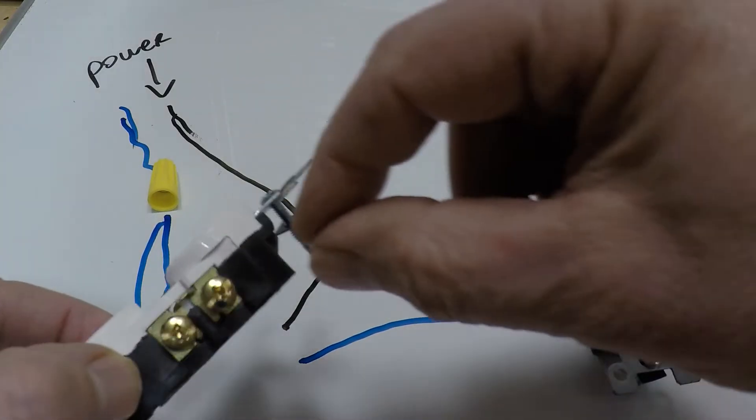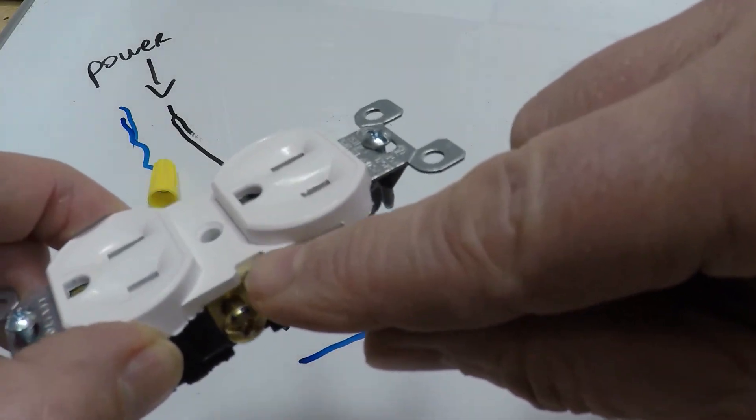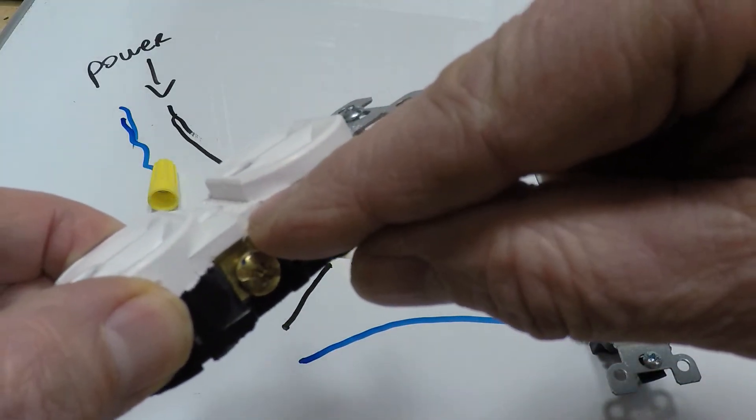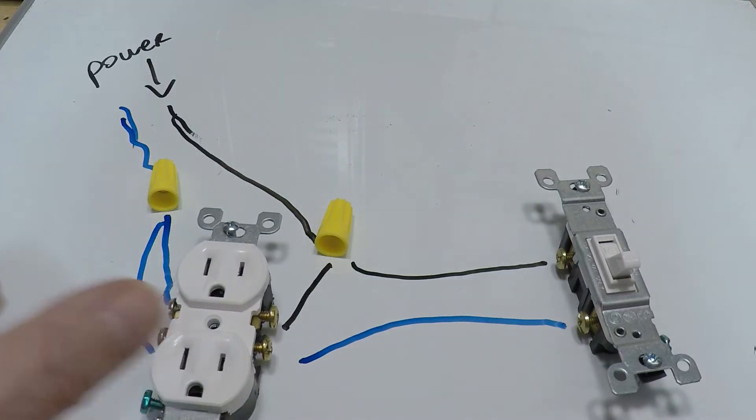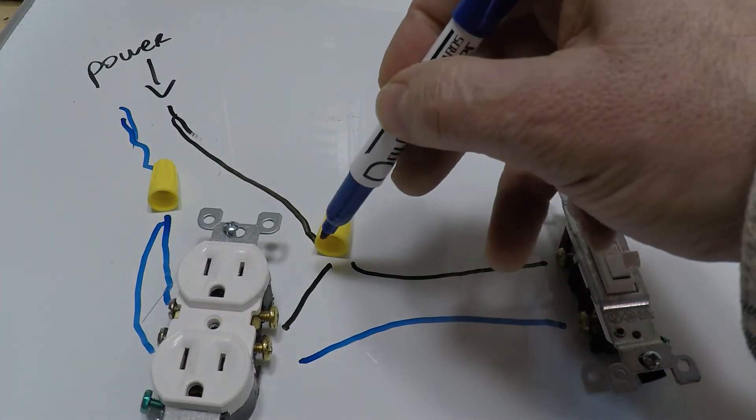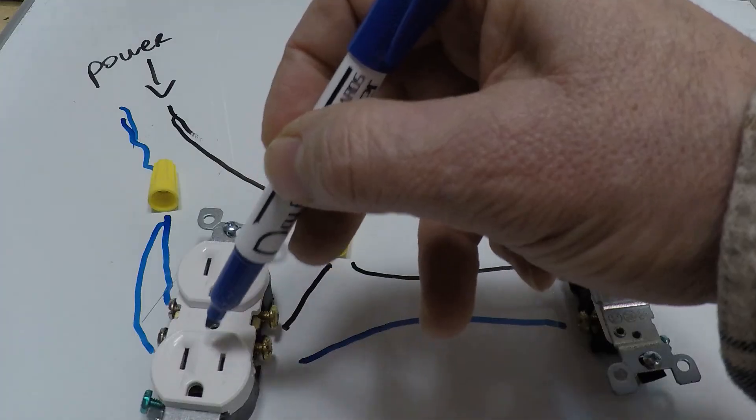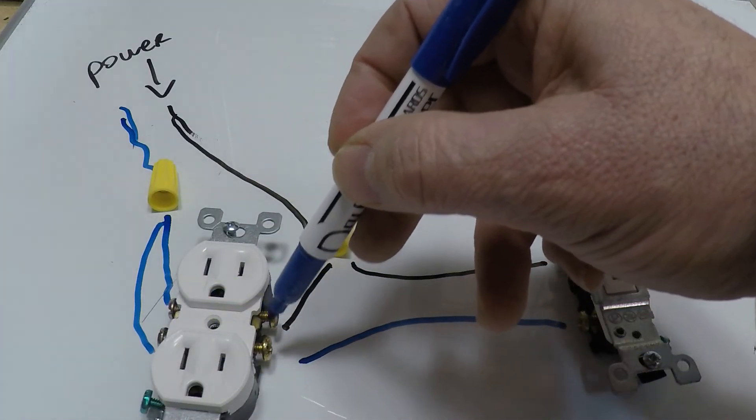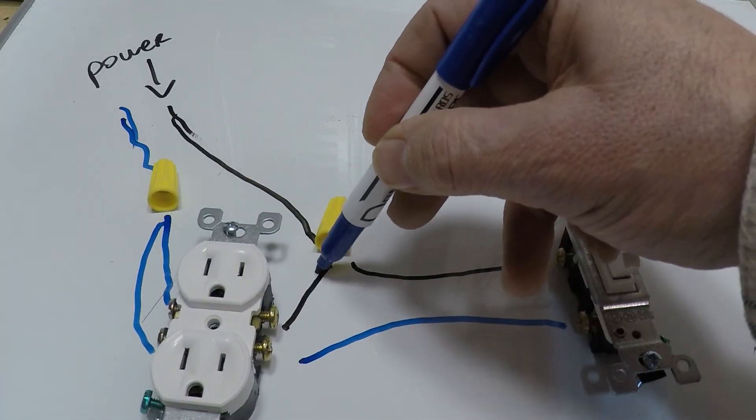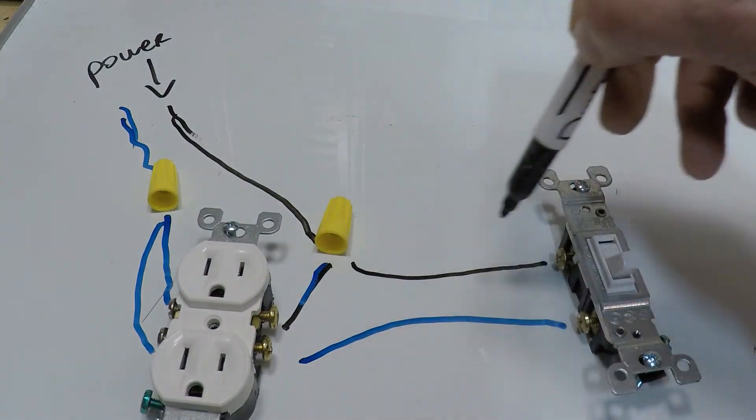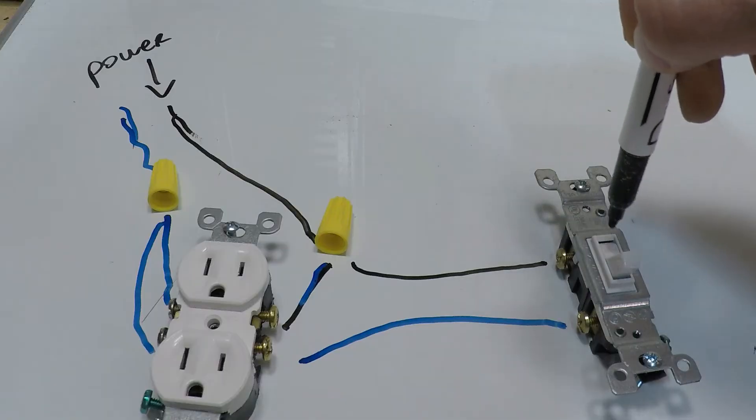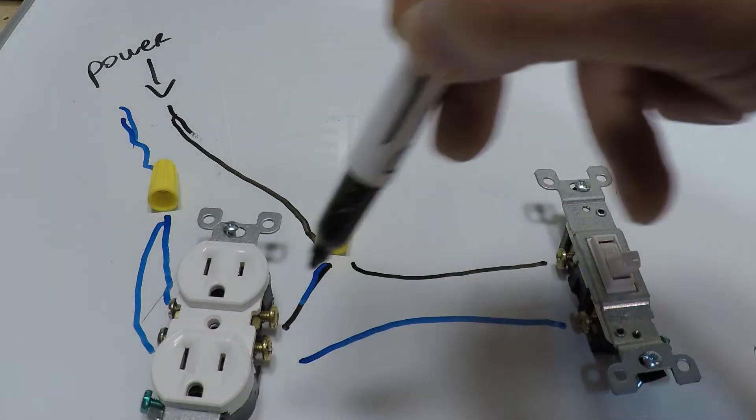So the way this—again—then you'd break this off with the needle nose pliers. You bend it back and forth until this breaks off. Now the power is only going to go to the bottom because we got this piece broken off, right? This one is always hot and this one won't be hot until you flip the switch.